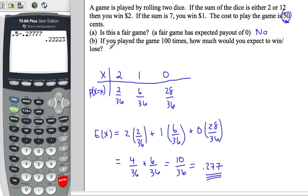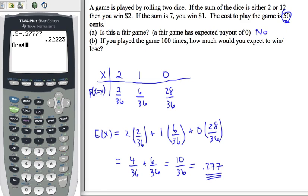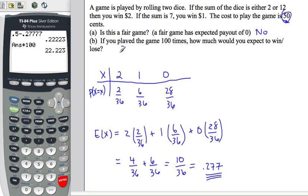If you played this game 100 times, each time you're expected to lose about 22 cents, so times 100, you're losing $22. It adds up quickly. So don't play this game — unless, of course, you're the house and you own the game.